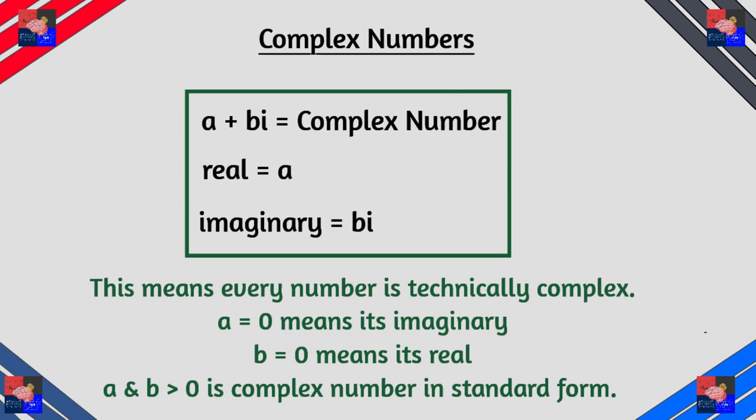A complex number has two parts, a real part and an imaginary number which is expressed as a plus b i. All numbers are complex in this sense because b just has to be zero for rational and irrational numbers to be the answer.